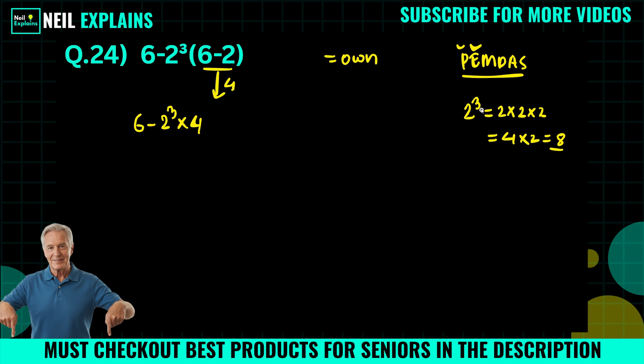We can write 8 in place of 2 to the power 3. So we have 6 minus 8 times 4.